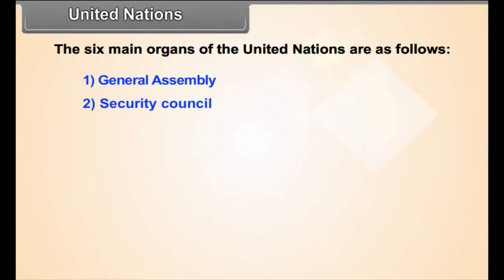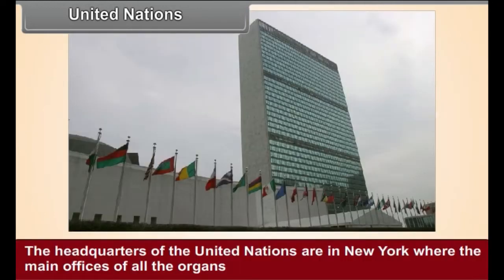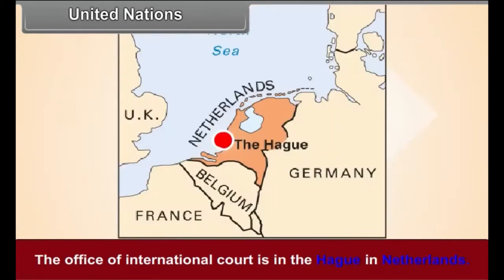The six main organs of the United Nations are: 1. General Assembly, 2. Security Council, 3. Economic and Social Council, 4. International Court of Justice, 5. Trusteeship Council, and 6. Secretariat. The headquarters of the United Nations are in New York, where the main offices of all the organs except the International Court of Justice are also located. The office of the International Court is in The Hague in Netherlands.